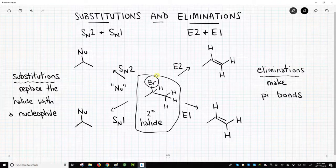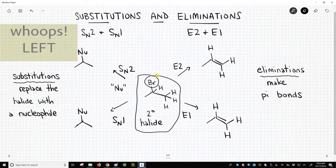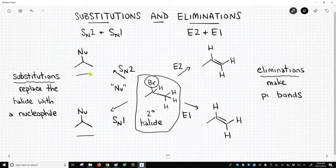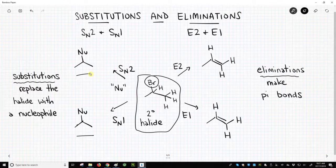If you look on the right-hand side of the screen, the SN1 and SN2 both form the same product. That is not always the case, but it's certainly the case in these artificial examples I've given. For that reason, people often group the SN1 and SN2, and they group together the E1 and the E2.